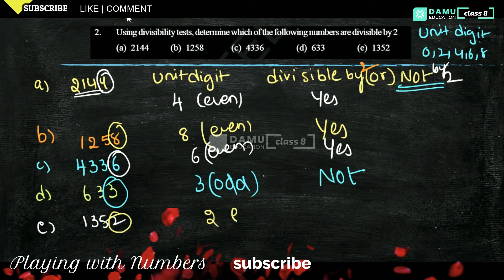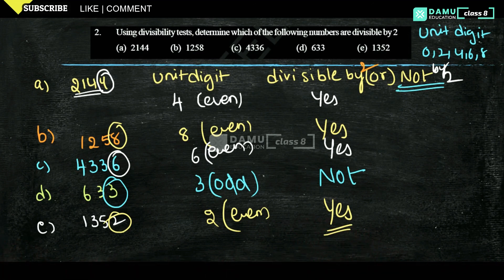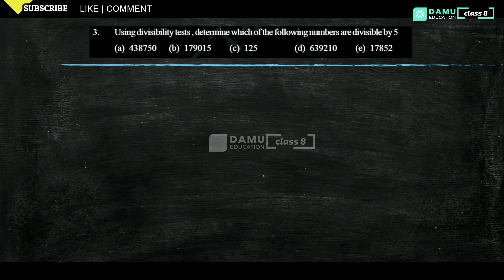The last one is 1352. The unit digit is 2, which is even, so yes it is divisible by 2. To summarize: any number divisible by 2 must have a unit digit ending with 0, 2, 4, 6, or 8.